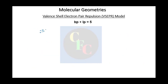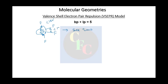This gives SF4 a see-saw structure. The angle that would be 180 degrees is now less than 180 degrees due to repulsion from the lone pair, and similarly the 120-degree angle is also reduced. It is called see-saw because if you view it sideways, it looks like a playground see-saw — one end goes down and the other up.